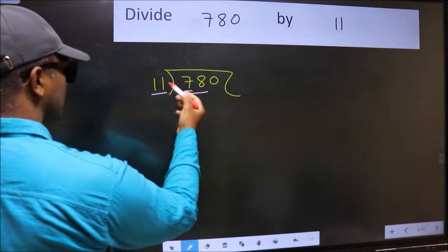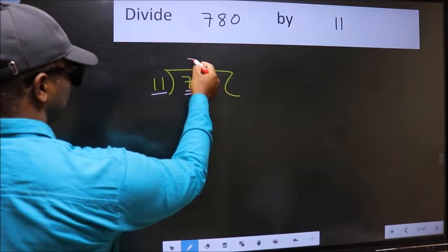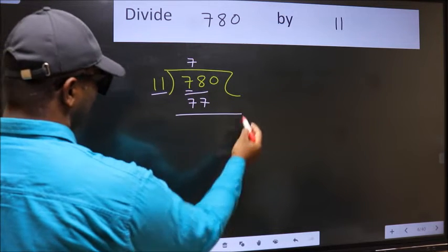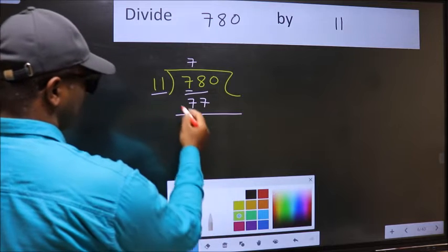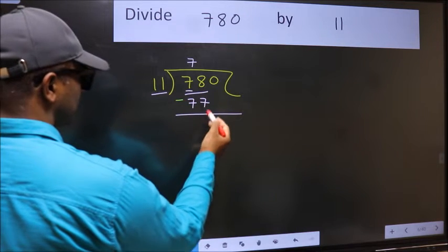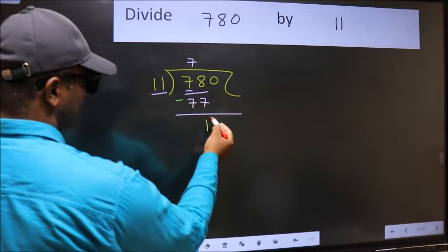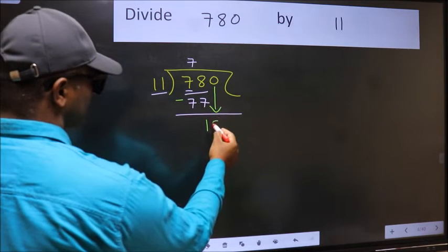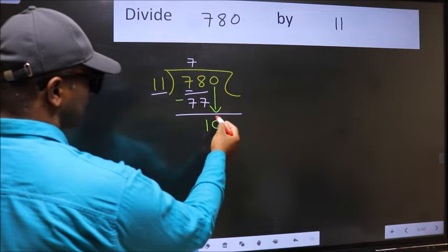A number close to 78 in the 11 table is 11 times 7, which is 77. Now you should subtract: 78 minus 77 equals 1. After this, bring down the next number, so bring down 0. After this step,